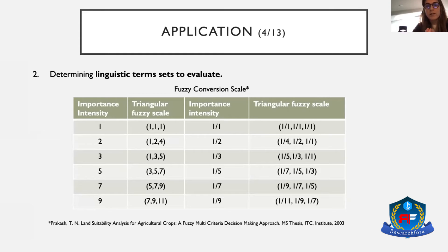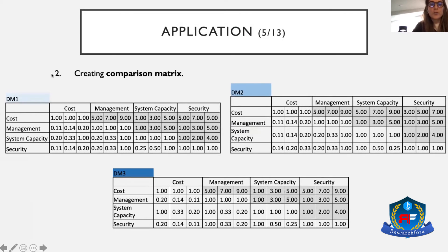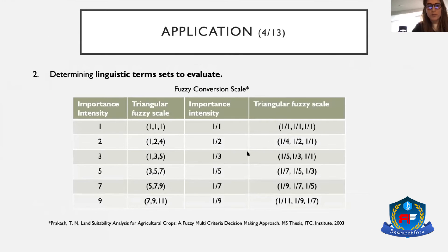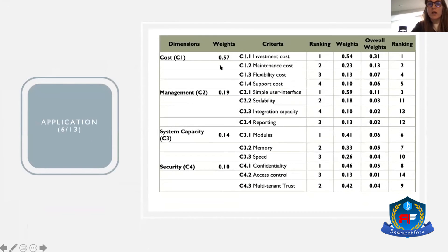We integrated this methodology with fuzzy logic. To make calculations with fuzzy logic, we first introduced a linguistic scale to evaluate the criteria and assess the alternatives. The first part is the weighting of the criteria, for which we used the AHP — the Analytical Hierarchy Process. We provided linguistic scales to the decision-makers and asked them to evaluate each dimension and sub-criteria pairwise. This yielded weights for each sub-criterion and overall weights for the assessment criteria, reflecting the managers' needs and demands.